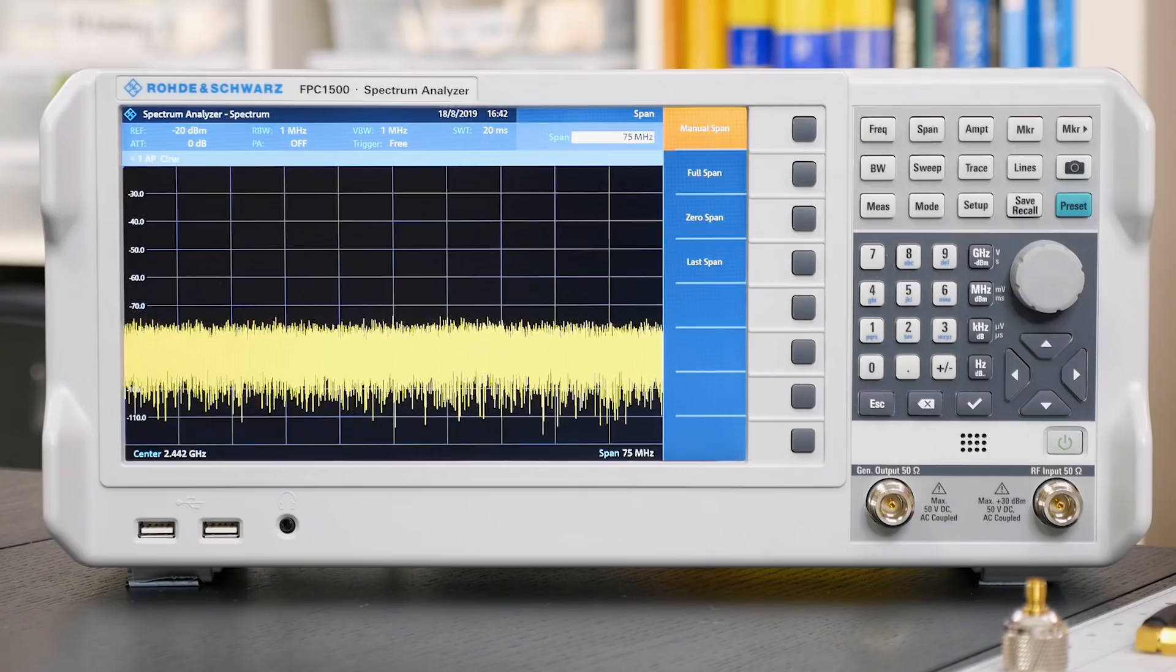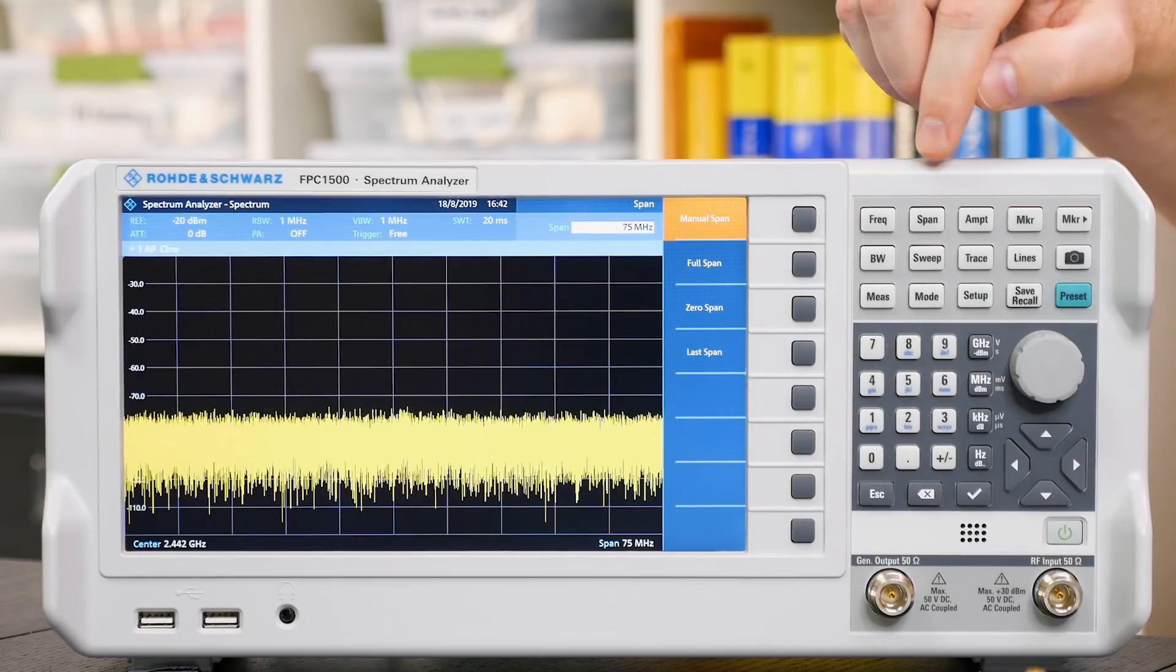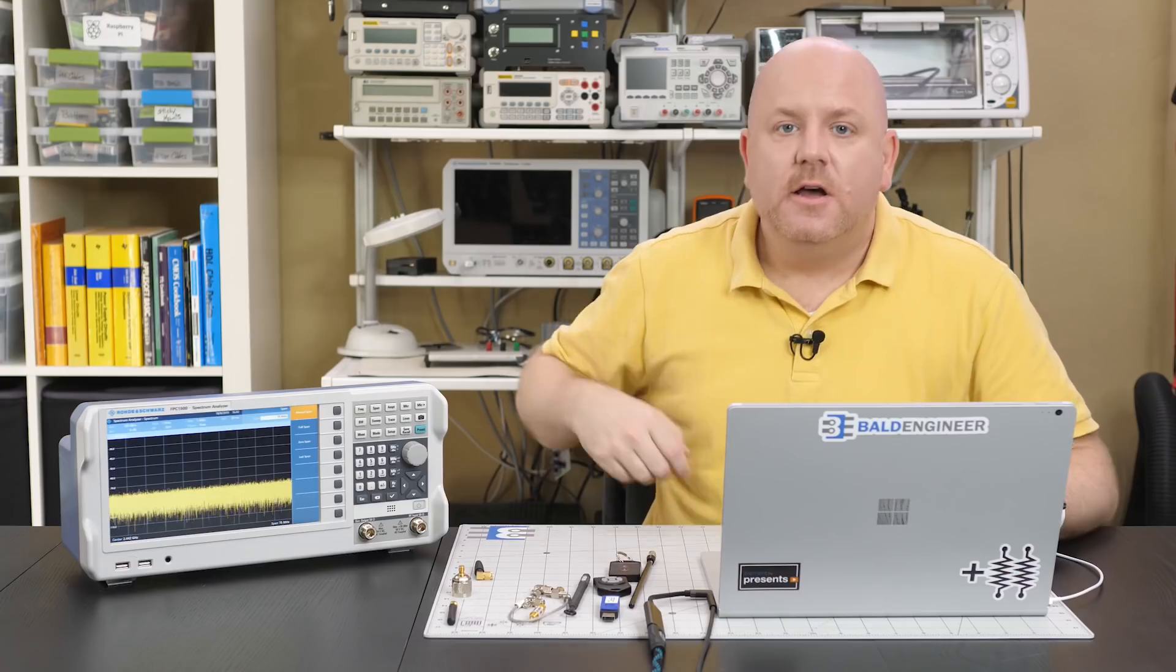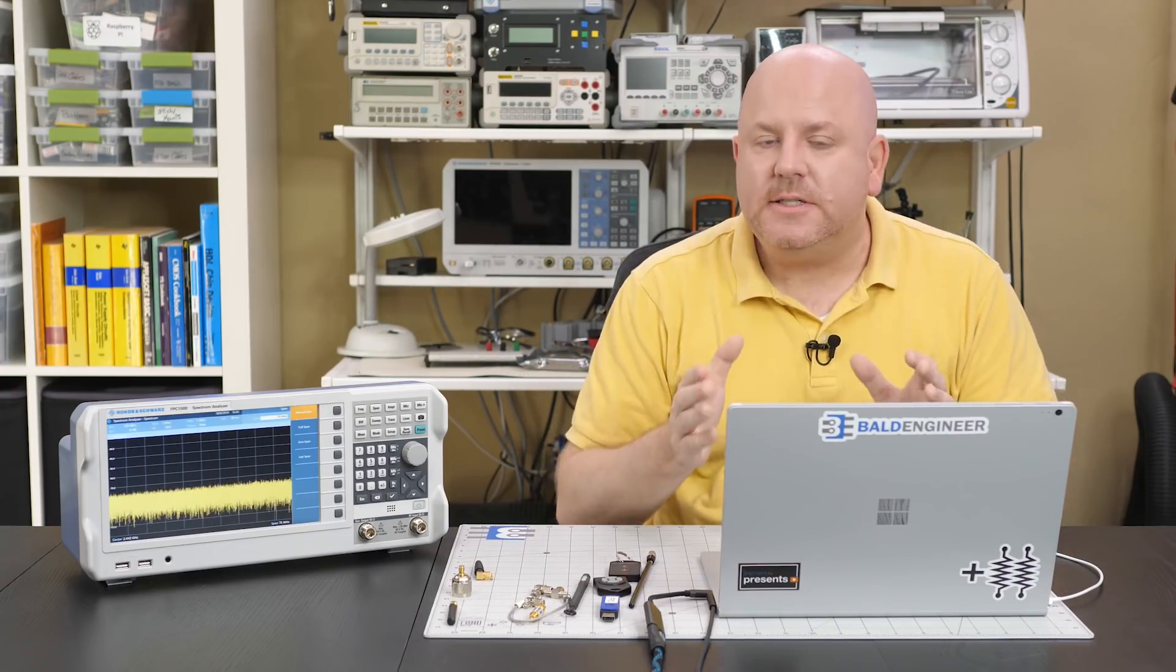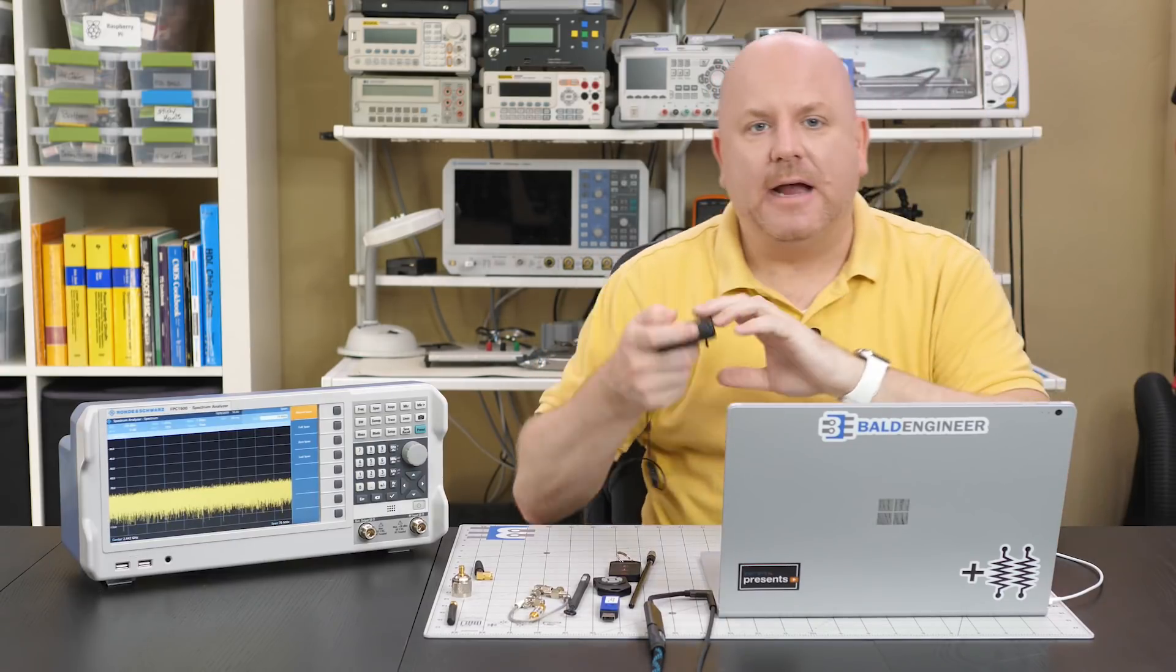Tell you what, to make understanding how to use an analyzer easier, we're going to use a device that transmits constantly on a single frequency. Despite all of these buttons, there are only four controls you need to know in order to use any spectrum analyzer. Just by using frequency, span, amplitude or reference level, and resolution bandwidth, we are going to find the frequency and modulation type used by my microphone transmitter.